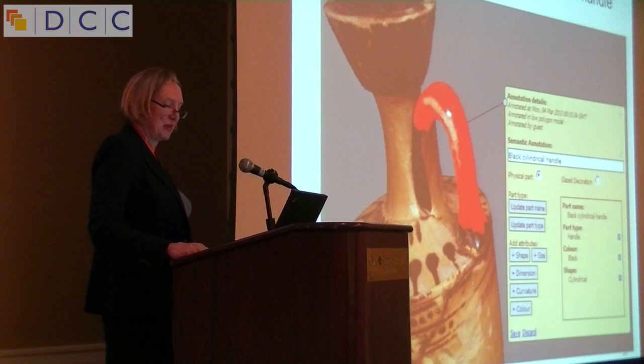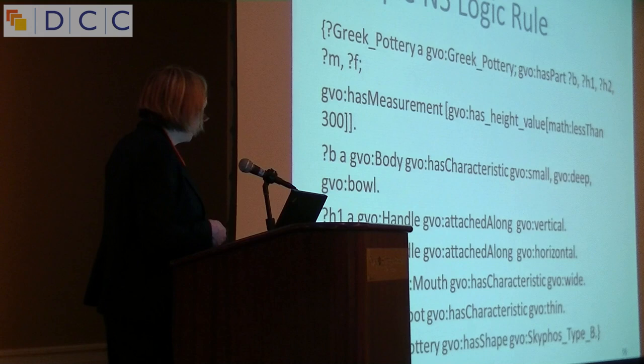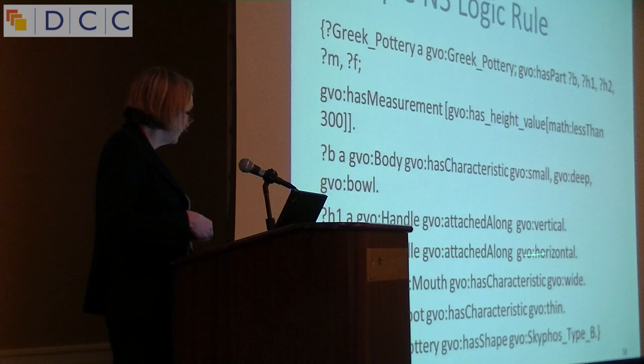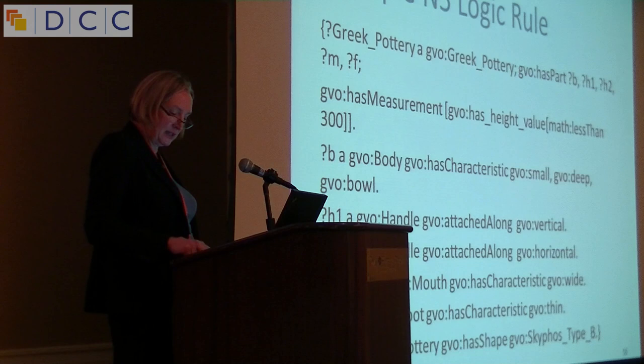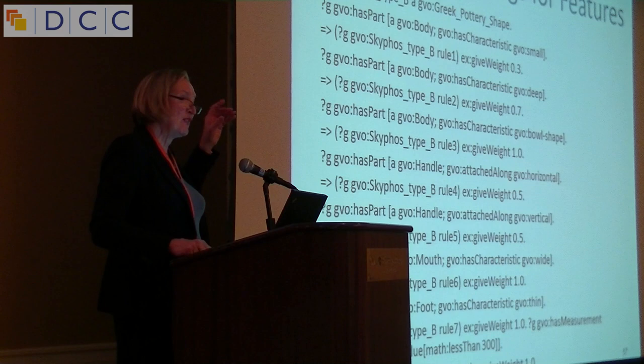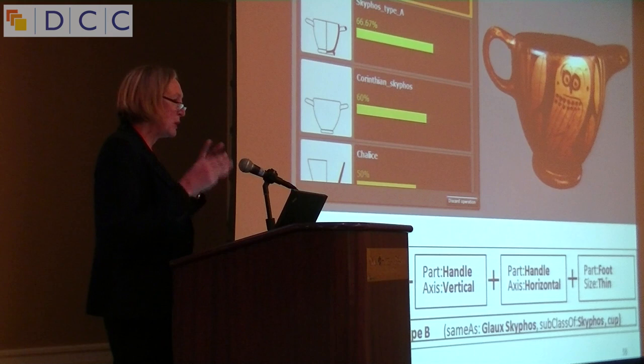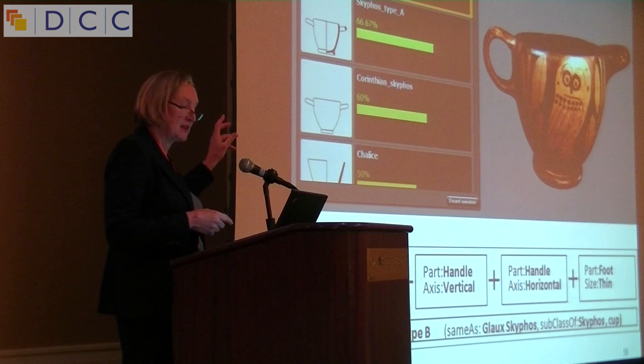This is a simple N3 logic rule which says that if it has a particular height, the body is small and deep, it has one vertical handle, one horizontal handle, a wide mouth, and a thin foot, then it's a skyphos type B. You can give weightings — in this case the fact that it has one vertical handle and one horizontal handle are very distinguishing attributes and you can weight those higher. Once you've got a tagged object you can run the reasoning engine and it gives you a ranked list of different vase types it's most likely to be.